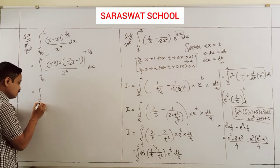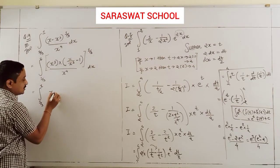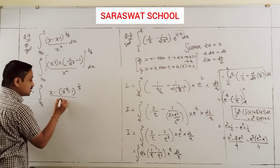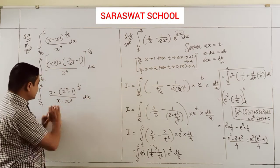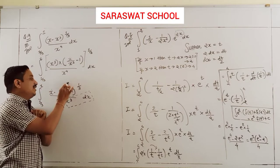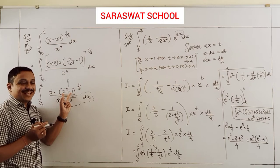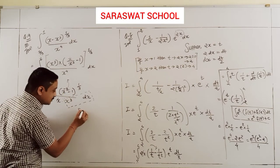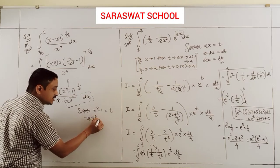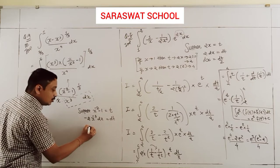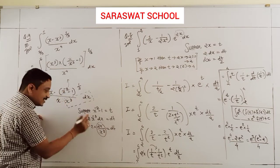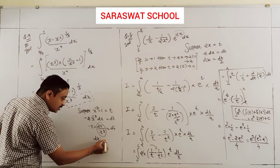Simplifying: (x-x³)^(1/3)/x⁴ = x(1-x²)^(1/3)/x⁴... rearranging gives (x⁻² - 1)^(1/3) × dx/x³. Can you imagine which derivative this is? So I assume x⁻² - 1 = t. The derivative is -2x⁻³ dx = dt, so dx/x³ = -dt/2.